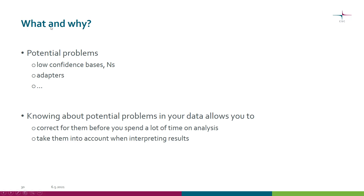So what kind of problems are there and why should we care? When the sequencing machine makes base calls, it's not always 100% confident, and these confidence levels are recorded as base qualities. If the machine is not able to decide what call to make at all, it will just put in N instead of one of the four bases. There can also be adapters and primers left in the reads, which we obviously need to remove prior to analysis.